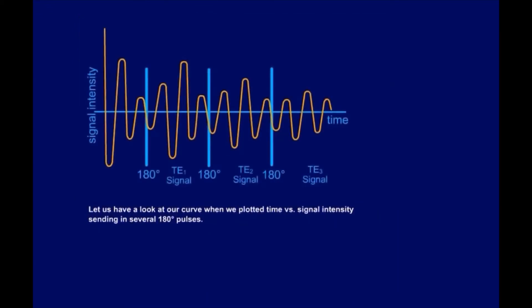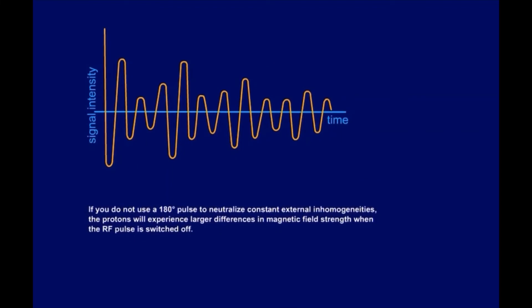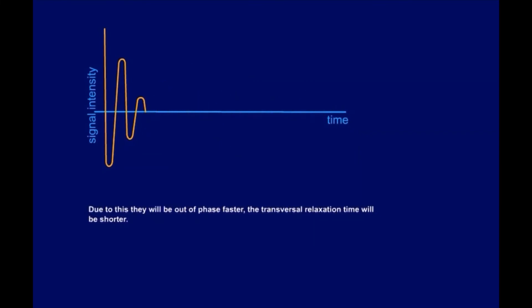Let us have a look at our curve when we plotted time versus signal intensity, sending in several 180-degree pulses. If you do not use a 180-degree pulse to neutralize constant external inhomogeneities, the protons will experience larger differences in magnetic field strength when the RF pulse is switched off. Due to this, they will be out of phase faster. The transversal relaxation time will be shorter.